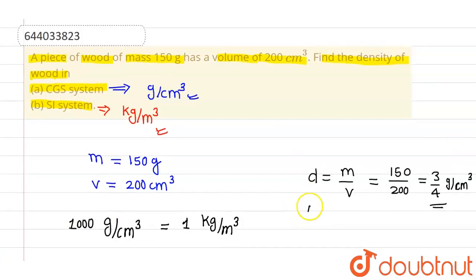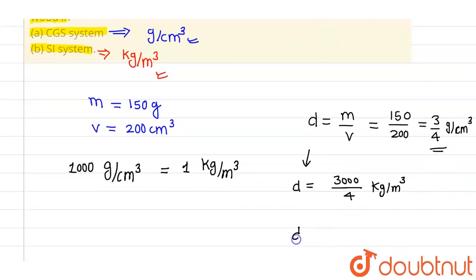So this density in SI unit will be d equals 3000 divided by 4 kilogram per meter cube. This can also be written as d equals 0.75 into 1000, which will be 750 kilogram per meter cube.